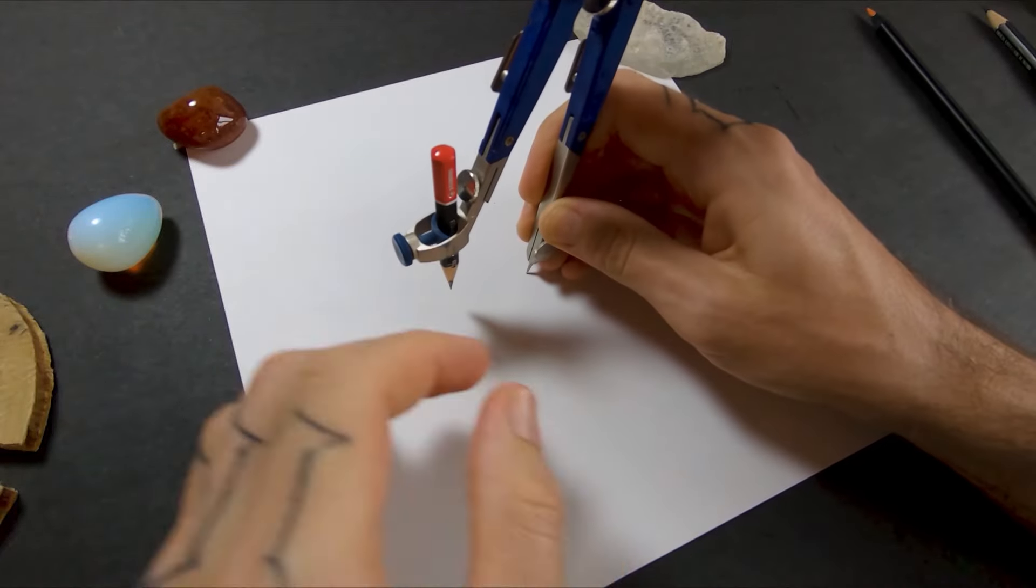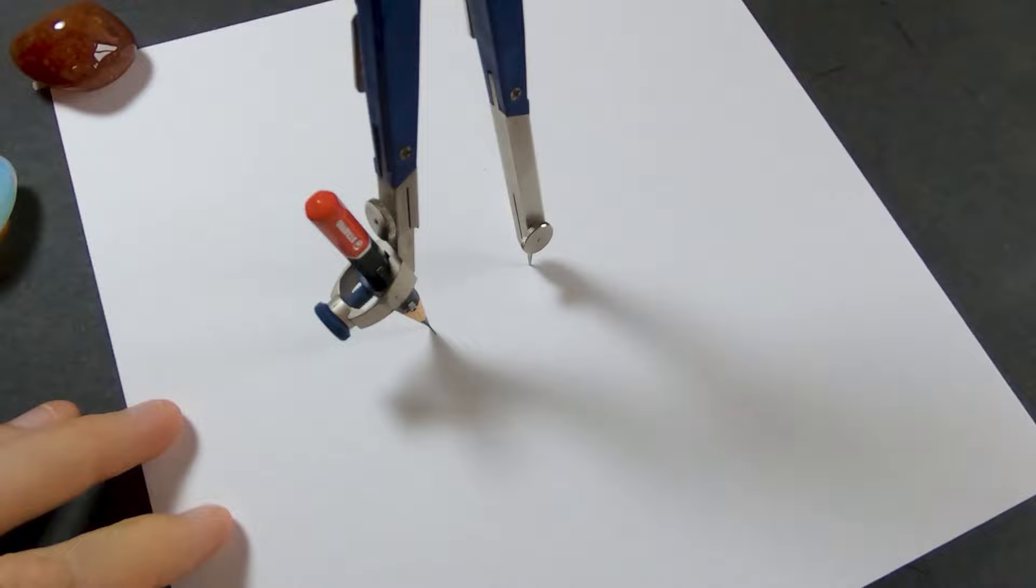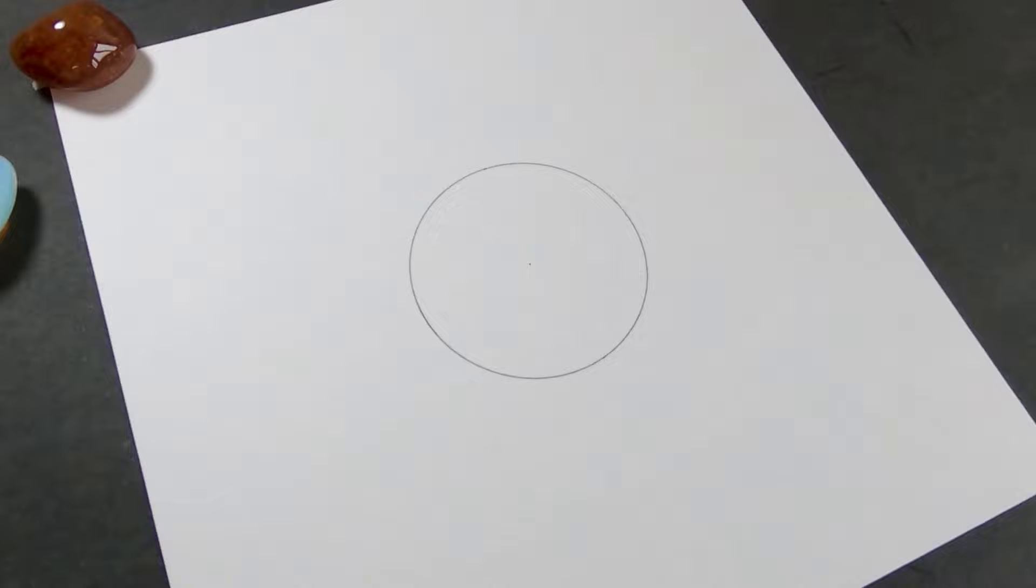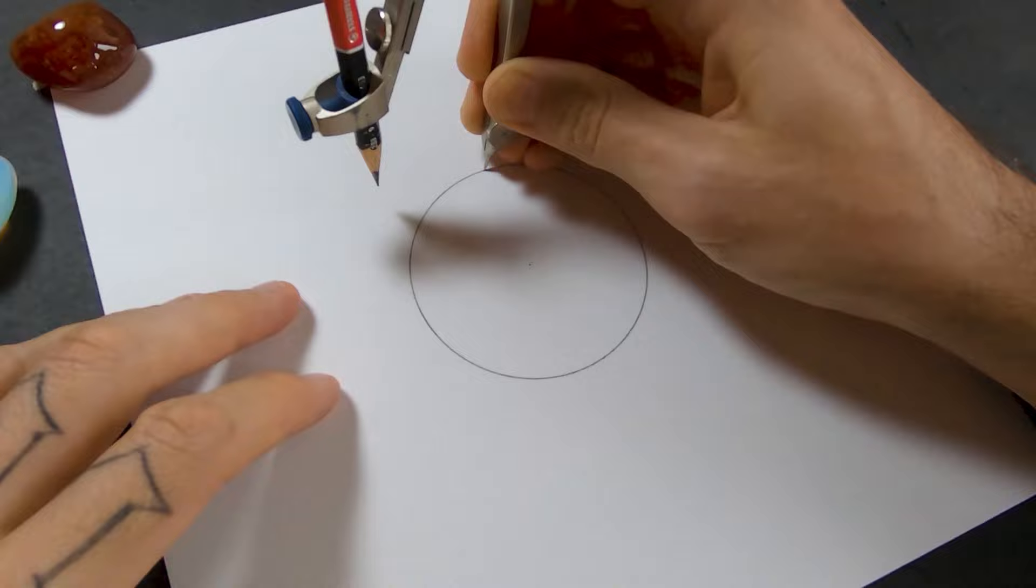All right, so the first thing I'm going to do is draw a circle. I got my compass set to about three and a half centimeters here. Then I'm going to put the compass point right at the top of the circle and I'm going to draw another circle exactly the same size.